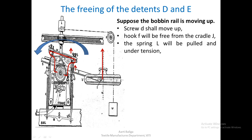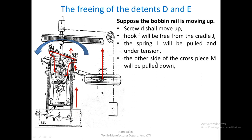Hook F will leave cradle J and spring L will be pulled and come under tension. Spring L comes under tension and is pulled upwards. The other side of cross piece M — since this side has been pulled upwards and M is fulcrumed at O — this particular side of M will be pulled down.